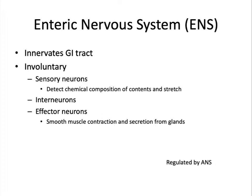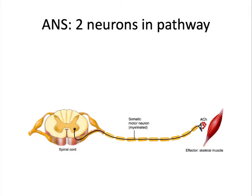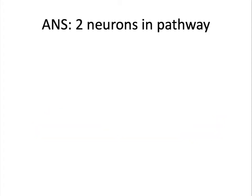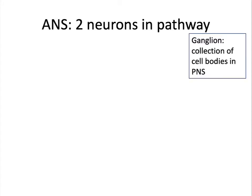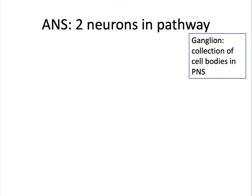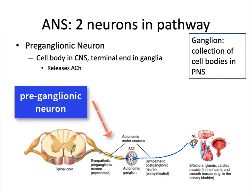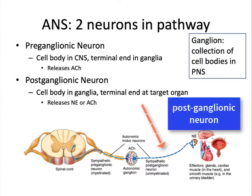The autonomic nervous system neurons are multipolar motor neurons that synapse in the lateral gray horn of the spinal cord. Remember that the skeletal motor pathway only has one neuron between the spinal cord and the effector. In the autonomic nervous system, there are two neurons in the pathway from the spinal cord to the effector — the two neurons synapse in a ganglion. Recall that a ganglion is a collection of cell bodies. In the autonomic nervous system, the neuron going from the spinal cord to the ganglion is called the preganglionic neuron, and the one coming from the ganglion to the effector is the postganglionic neuron.